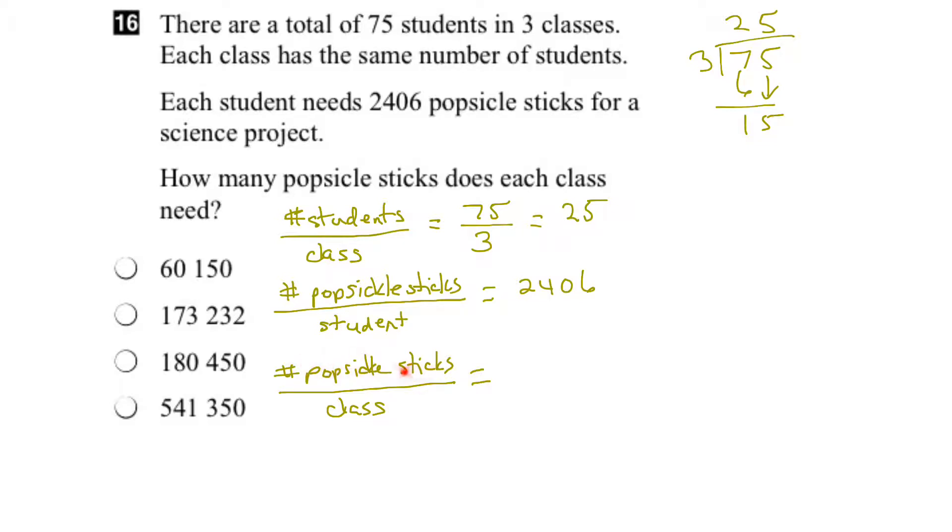So let's see what we've got. We've got the number of popsicle sticks per student. So let's put that over here: number of popsicle sticks per student. And then we have the number of students per class. If we put that here, the number of students per class,